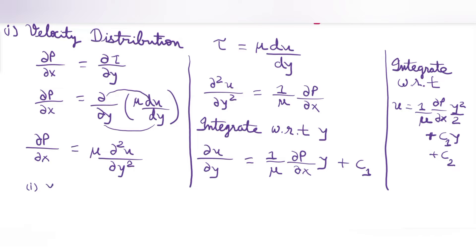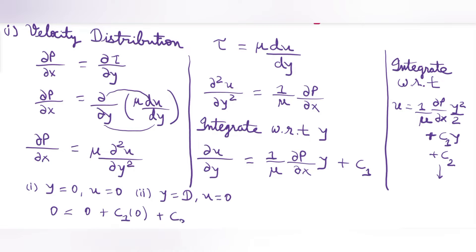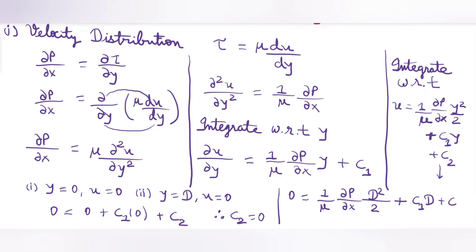Note that this case differs when the viscous fluid flows between two parallel plates having relative motion — the boundary conditions change. For our case: at y = 0, u = 0 gives C₂ = 0. Placing y = D, u = 0 in the equation and using C₂ = 0, we find C₁ = −(1/2μ)(∂P/∂x)·D.